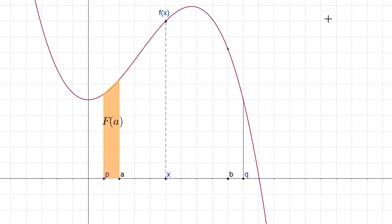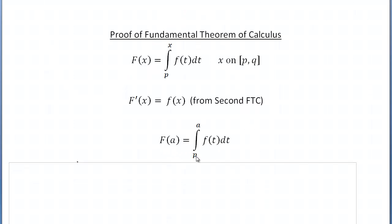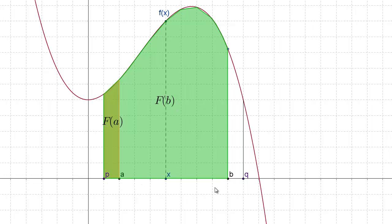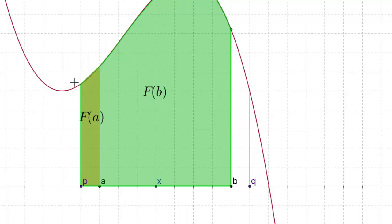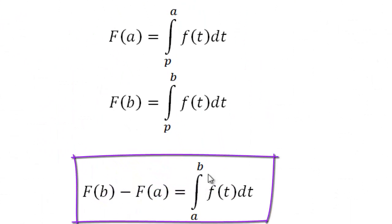We let capital F of a be the accumulated area from p to a, written as the definite integral from p to a of little f of t dt. Similarly, capital F of b is the accumulated area from p to b, represented by the integral from p to b of f of t dt. The difference between them — capital F of b minus capital F of a — is the area between a and b, which equals the definite integral from a to b of f of t dt.